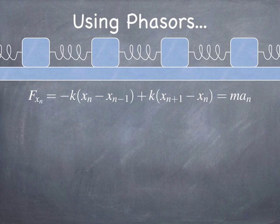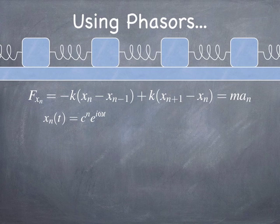In reality, if you measure the displacement of the mass it's going to be real. So at the end we can take just the real part. But if we allow the x's to be complex, it gives us a way to find an algebraic solution without eigenvalues and linear algebra. Here's the plan: you make a guess that the displacement of the nth mass is c to the nth power times e to the i omega t. We demand that c is a pure phase — a complex number with magnitude one — meaning the amplitude of displacement doesn't go up or down as you move along the chain.